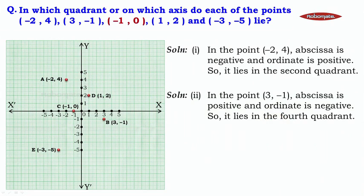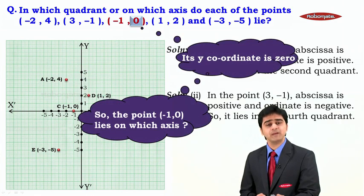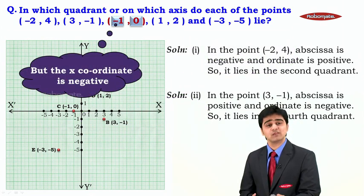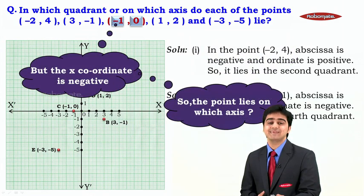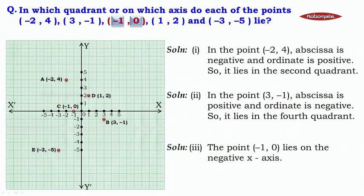The third point has got its coordinates to be minus 1 comma 0. Its y coordinate is 0, so the point lies on the x-axis. But the x coordinate is negative, so it will be lying on the negative x-axis. The point minus 1 comma 0 lies on the negative x-axis.